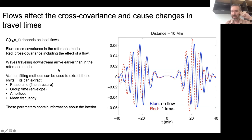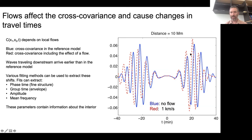There are different fitting methods you can use to extract these changes in the cross-covariance. People sometimes talk about phase times - shifts in the fine structure of the wave packet - group times or changes in the envelope of the wave packet, the amplitude or the height of the envelope, or the mean frequency. These parameters tell you something about what's going on in the interior.